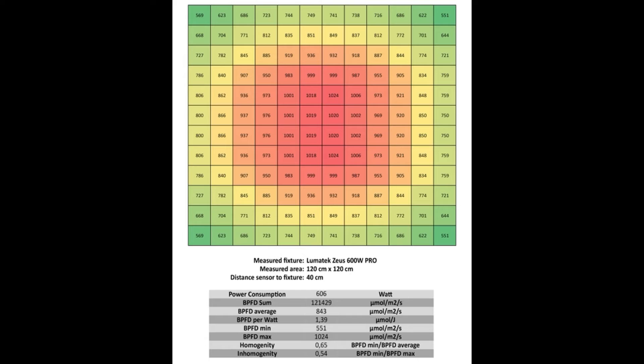The minimum value of the PPFD is 551 and is in the right upper corner. The maximum value is 1024, is right at the center. The homogeneity is 0.65 and the inhomogeneity calculates to 0.54.